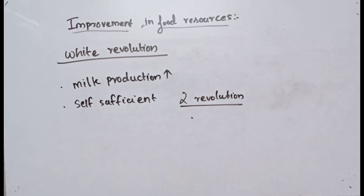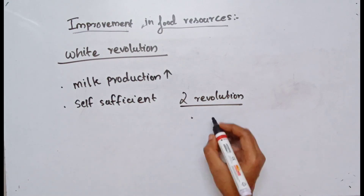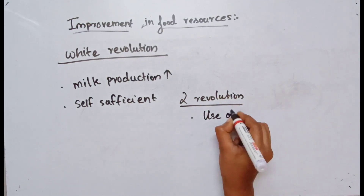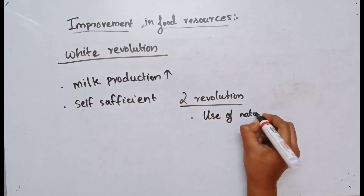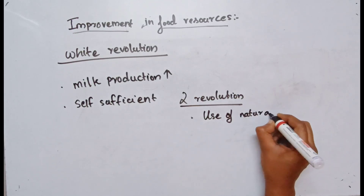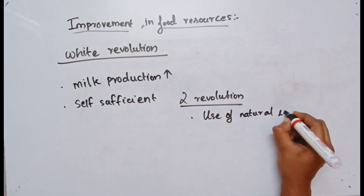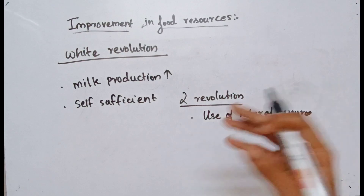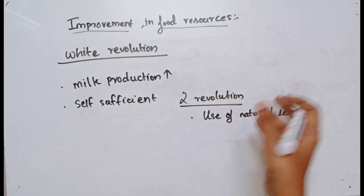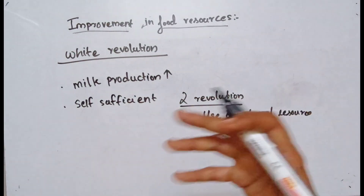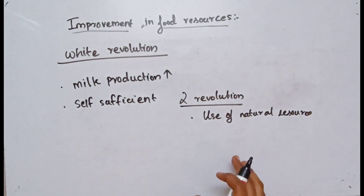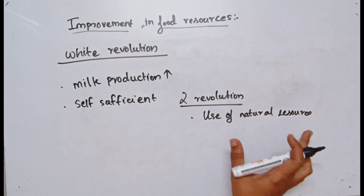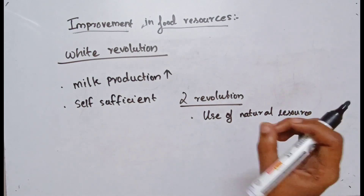The Green Revolution and White Revolution also call for the use of natural resources. For example, we have land, water, and manures that we have to use wisely for future generations.